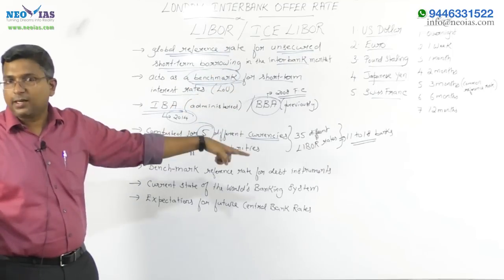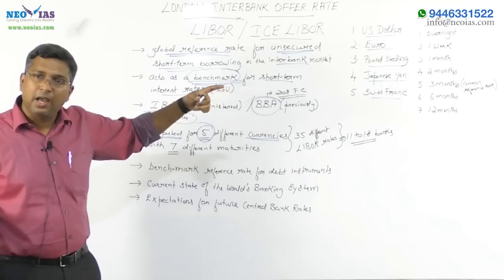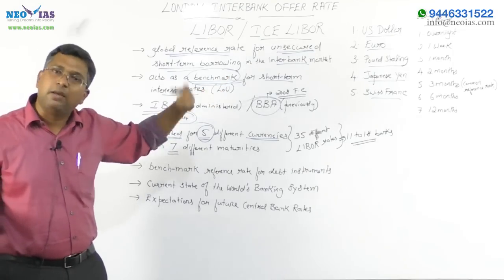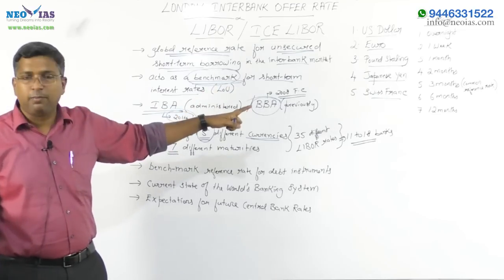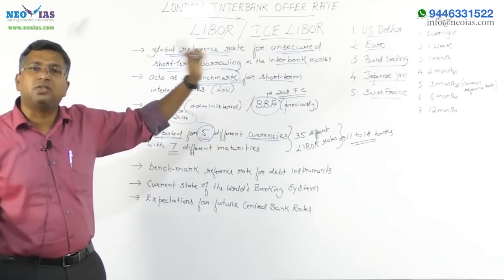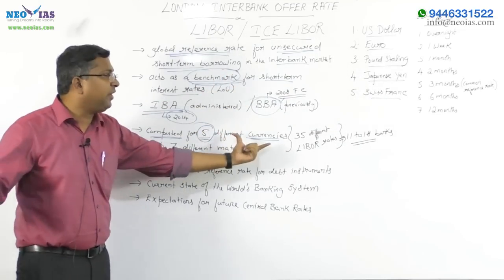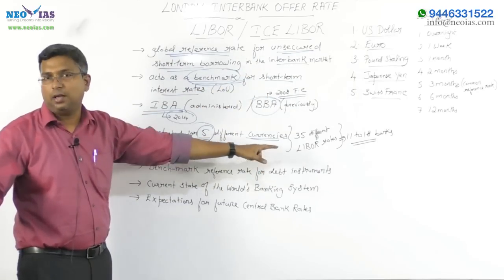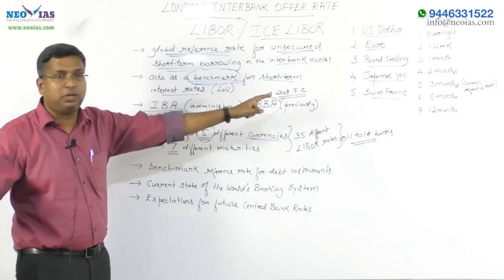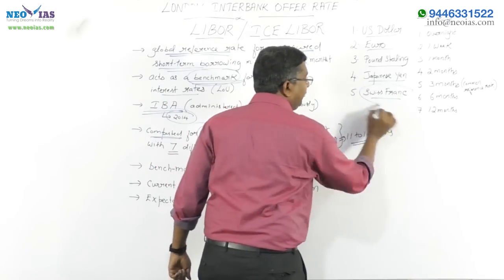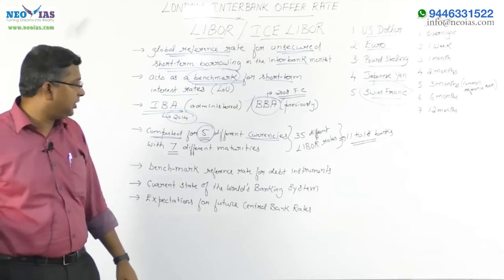Keep in mind that even though Chinese yuan has been added to the IMF's Special Drawing Rights (SDR), it has still not been added to the London Interbank Offer Rate computation. LIBOR is computed for 5 different currencies — mainly the hard currencies of developed countries. The other 4 currencies are easy to remember; Swiss franc is the 5th currency to note down.